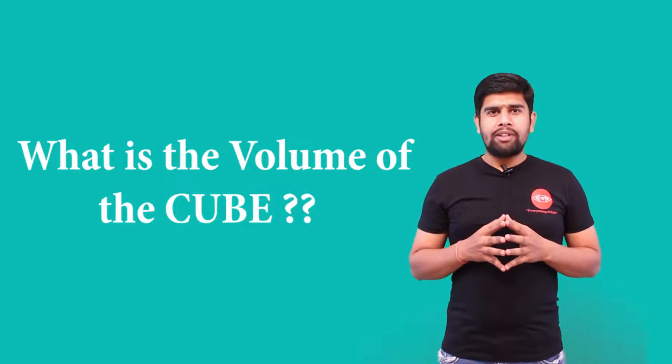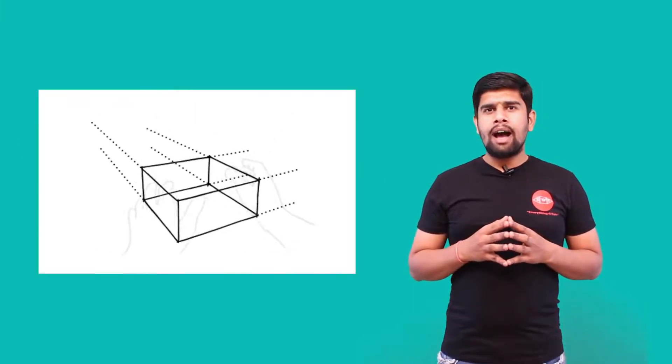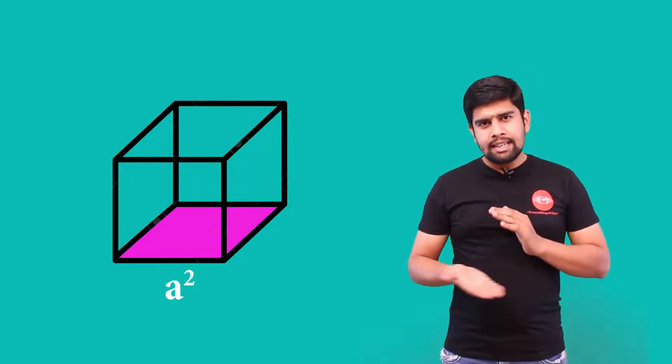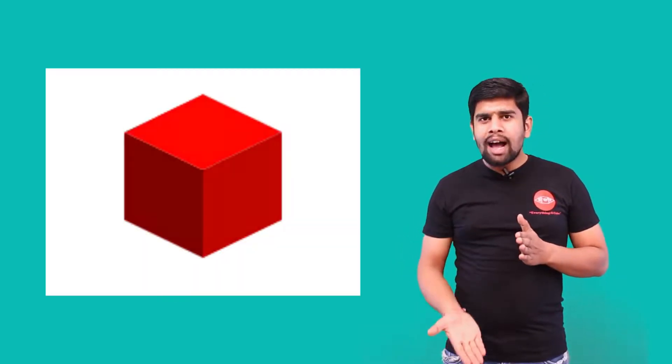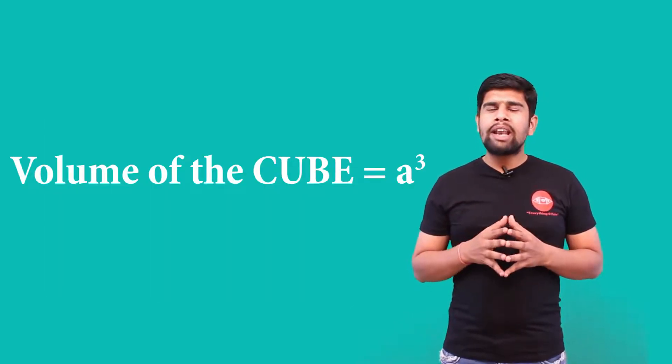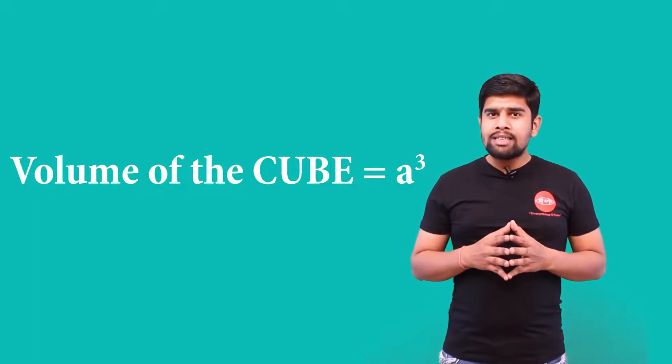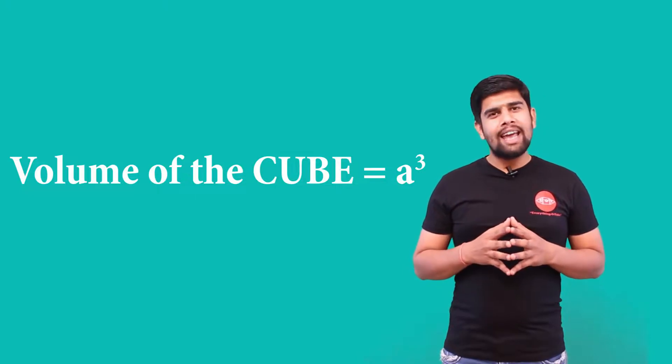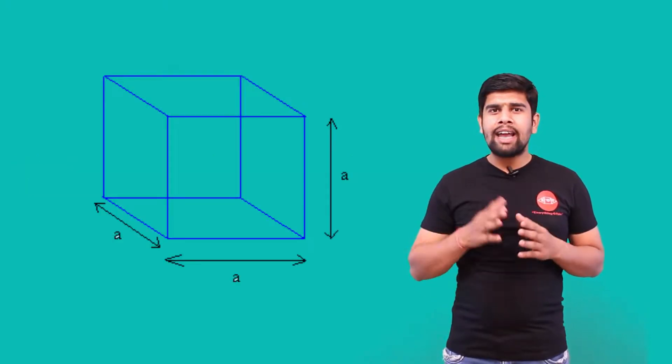Now, what is the volume of the cube? If we take the square lamina of area a squared and integrate it over the height a — that is, stack such square laminas over height a — we get a solid figure. The volume of the cube is therefore a squared multiplied by a, which equals a cubed.